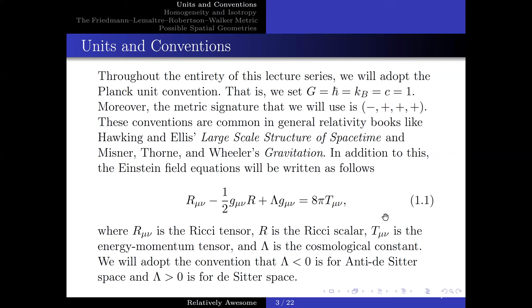where R_μν is the Ricci tensor, R is the Ricci scalar, T_μν is the energy-momentum tensor, and Λ is the cosmological constant. We will also adopt the convention that Λ less than zero is for anti-de Sitter space, and Λ greater than zero is for de Sitter space.